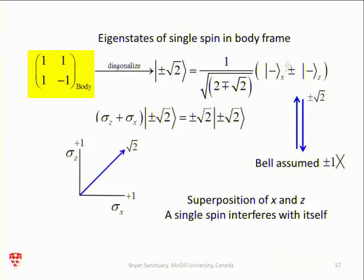And when I diagonalize it, I get states for a single particle, which are superpositions of the two axes of quantization here, z and x. And the eigenvalues of these equations, sigma-z plus sigma-x, are plus or minus root 2. Mainly because the state bisects the two axes, and just by Pythagoras, they sum up to square root of 2, the length. So Bell assumed plus or minus 1. But when you don't look at it, and you assume two axes of quantization, you get plus or minus root 2 as the eigenvalues instead of plus or minus 1.